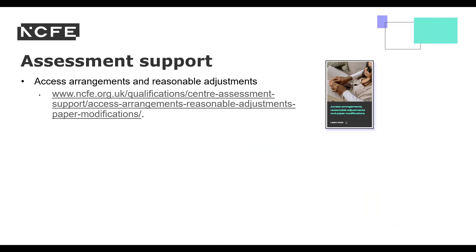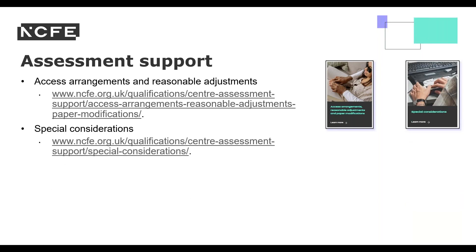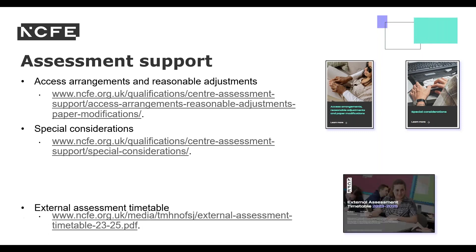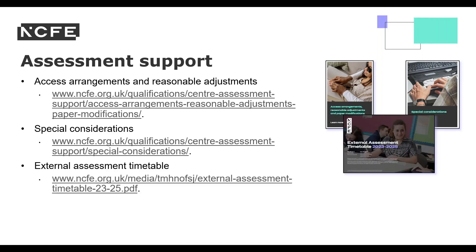On our website, you will find everything you need to support you with assessment. In the Access Arrangements and Reasonable Adjustments section, you will find information about paper modifications and ways that fair assessment can be achieved, along with associated policies. In Special Considerations, you will find the policy, the definition, timescales and how to submit a request for external and internal assessment. Before booking an external assessment, please refer to our external assessment timetable for booking cutoff dates, assessment dates and times, and results release dates. For VCERT qualifications, you are required to make a booking for the external assessment at the time of registration, and you will be prompted to select an external assessment date before completing registration on the portal.